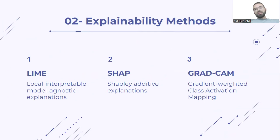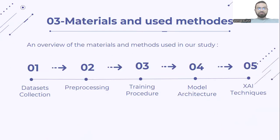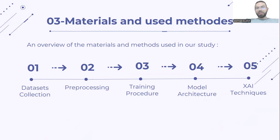Here we have the explainability methods used. First, LIME, which means Local Interpretable Model-Agnostic Explanation. The second is SHAP, which stands for SHapley Additive exPlanations. The third is Grad-CAM, which means Gradient-weighted Class Activation Mapping. For the material and method, the overview includes: first, dataset collection; then preprocessing and training procedure; model architecture; and finally the XAI techniques, meaning LIME, SHAP, and Grad-CAM.